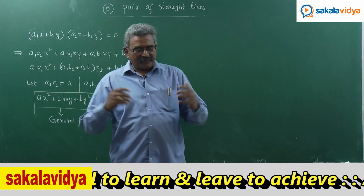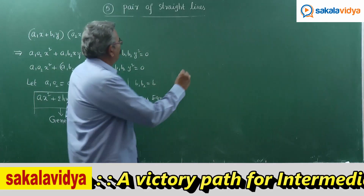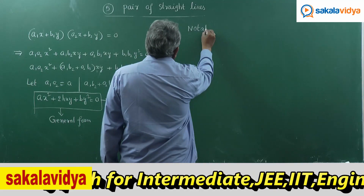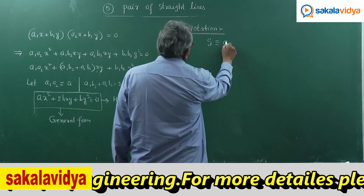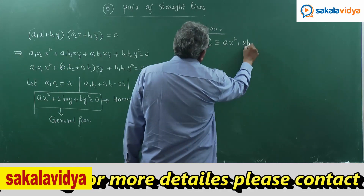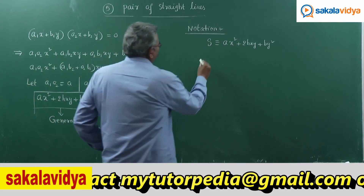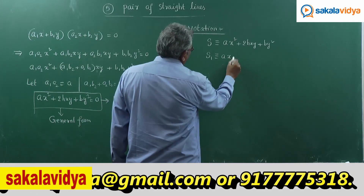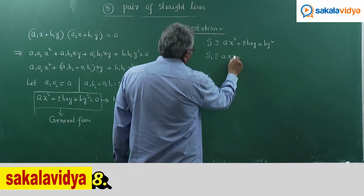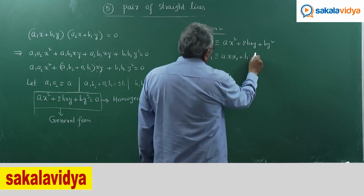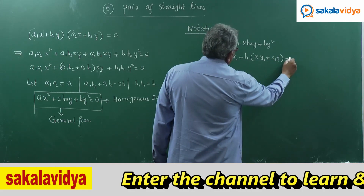In this topic, the pair of straight lines passing through the origin is denoted by the notation S, where S = AX² + 2HXY + BY². We also use the notation S1, which represents AXX1 + H(XY1 + X1Y) + BYY1.